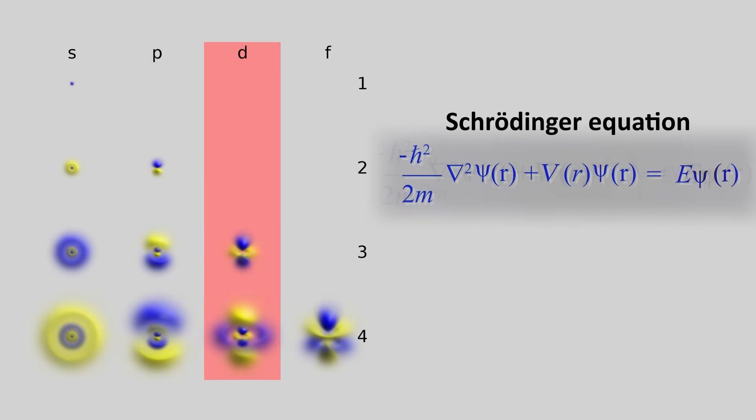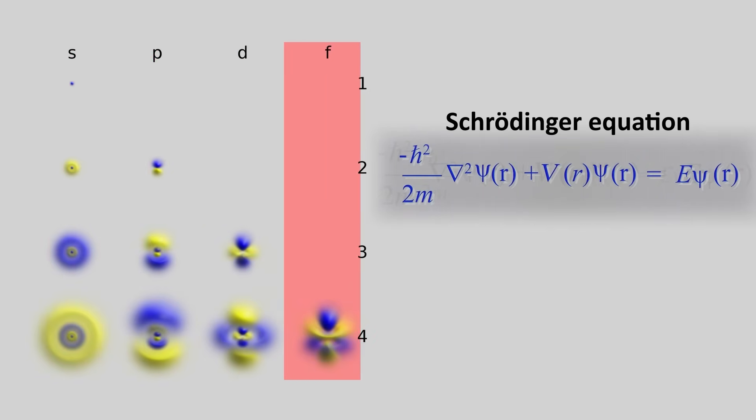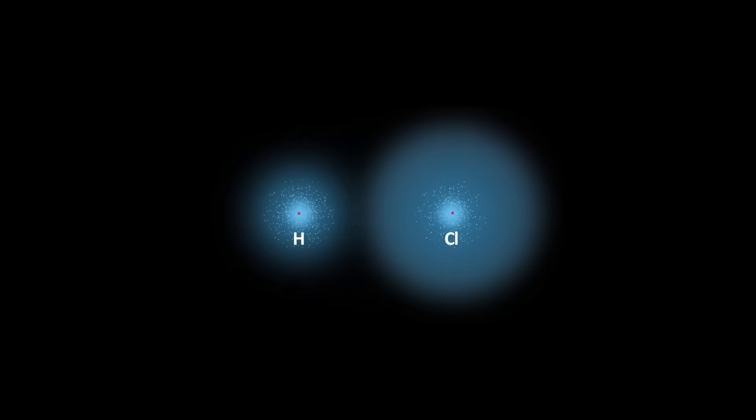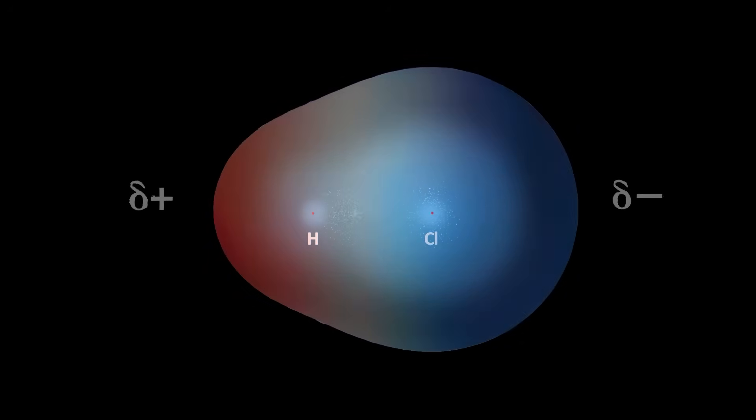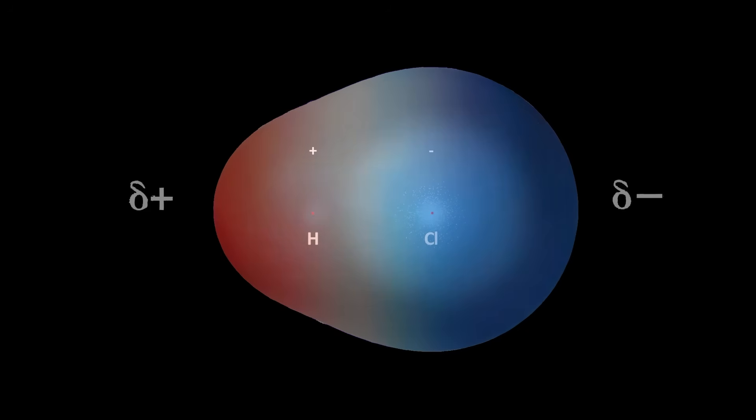To summarize: electrons play a key role in chemistry, including that of acids and bases. The orbitals around the nucleus of an atom, where electrons are most likely to be found, are determined by the Schrodinger equation. The asymmetry of electron clouds drives proton transfer reactions, which are critical in biological and industrial processes. Electrons are tiny, but their impact is very large — shaping the substances and processes that make up our world and the entire universe. I will see you in the next video.